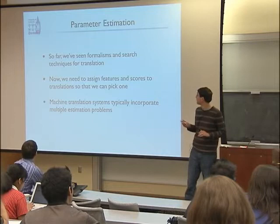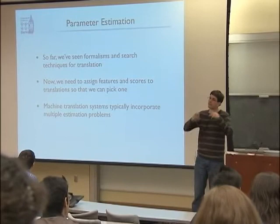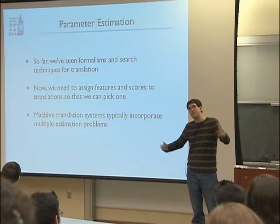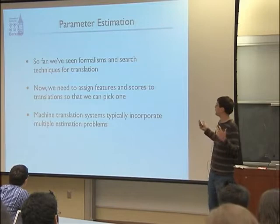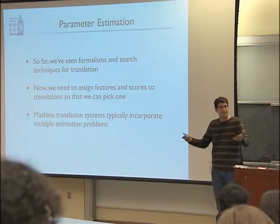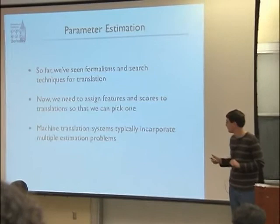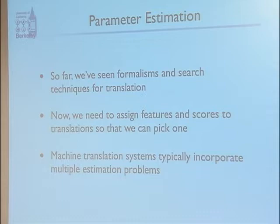So far, what you've seen is a bunch of different models — or really formalisms — of how to translate. Should I grab words at a time? Phrases? Grammatical chunks? We're going to search over this big space of all the different ways to translate a sentence, and we're trying to find the highest scoring one. We're in the business of assigning features to pieces of the translations we're building up, and scoring them. Choosing features, weights, and scores are all types of estimation problems. Machine translation is interesting because it's built in a big pipeline with lots of different estimation problems.